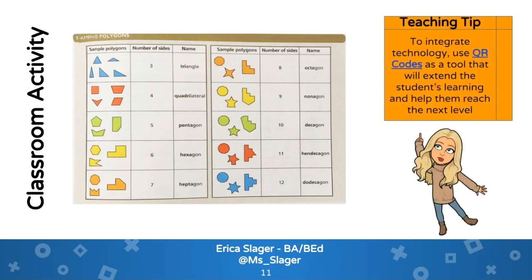A great way to bring level two into the classroom through technology is using QR codes. For each sample polygon displayed, you can attach a QR code so students can scan them around the classroom, potentially watching a video that explains what that polygon is, how it is classified with similar shapes based on its name, number of sides, angles, and so on.